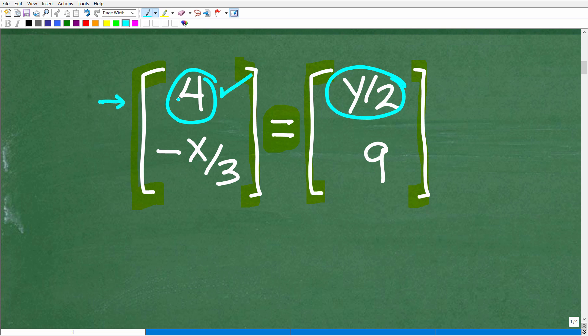So if this is four, and what's the location of this matrix here, where this is row, what we call row one, column one. So row one, column one is four. And right here we have row one, column one, it's y over two.